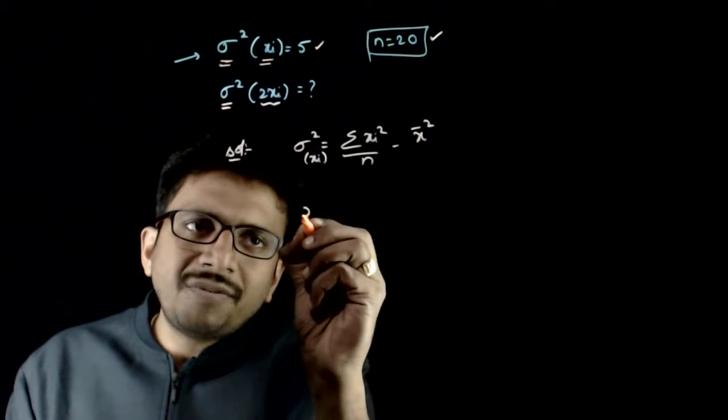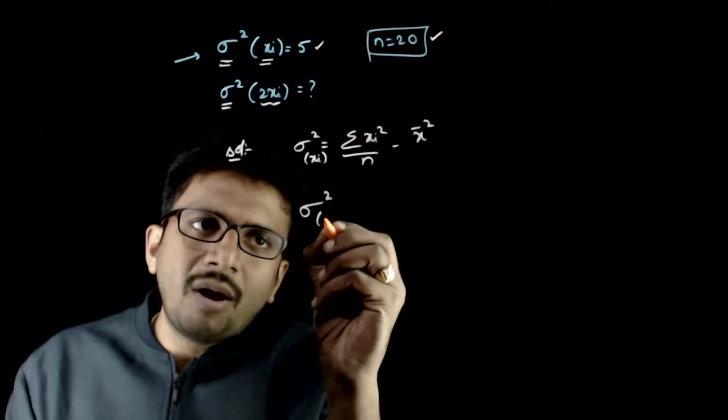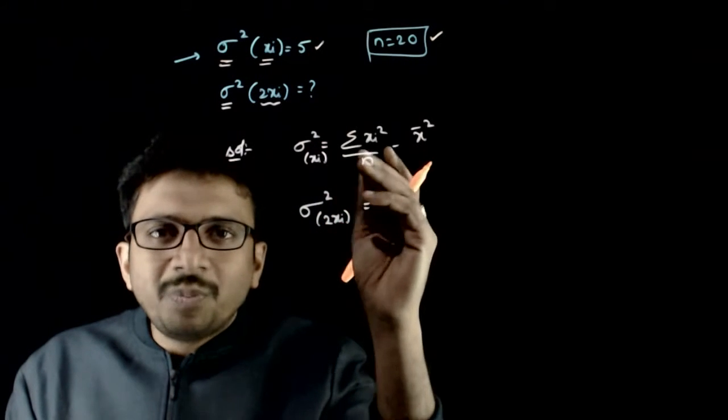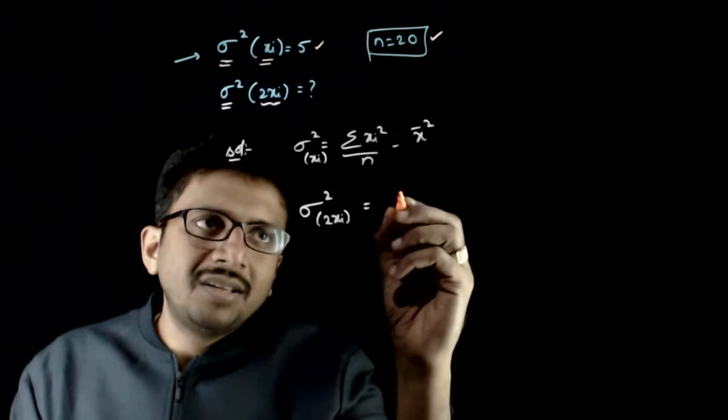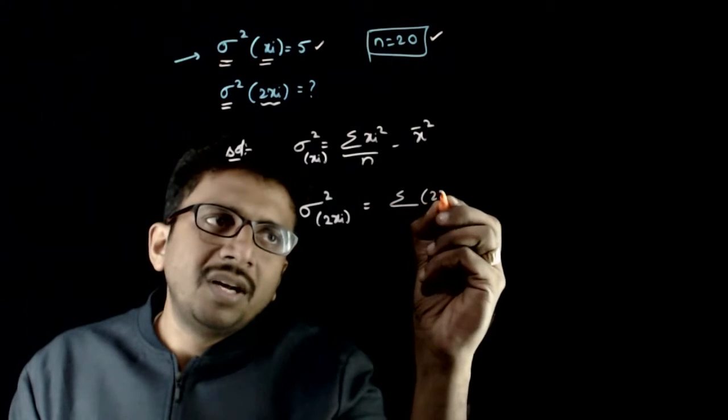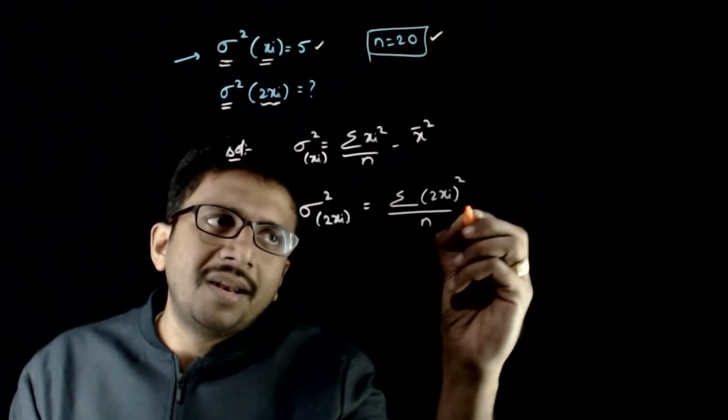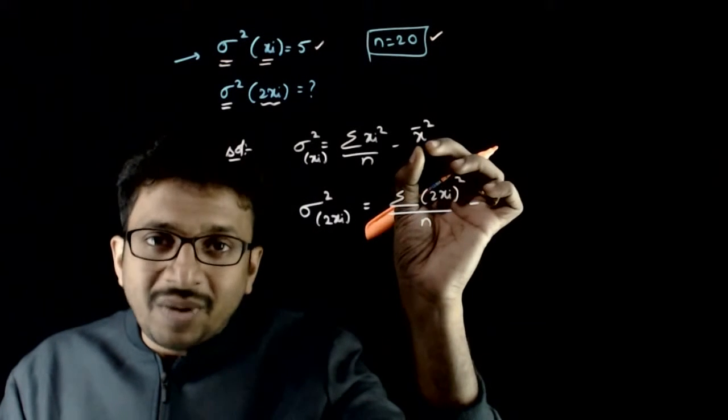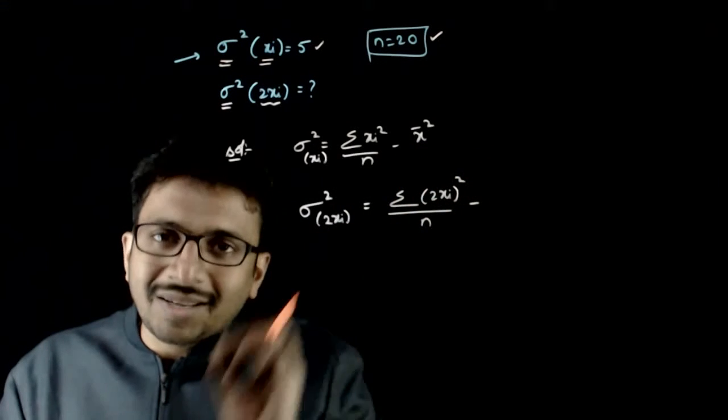Now we're asked to find sigma square of 2xi's. That means you just need to put 2xi in the place of xi. That's nothing but sigma of 2xi whole square by n minus the x bar, the mean of 2xi's.